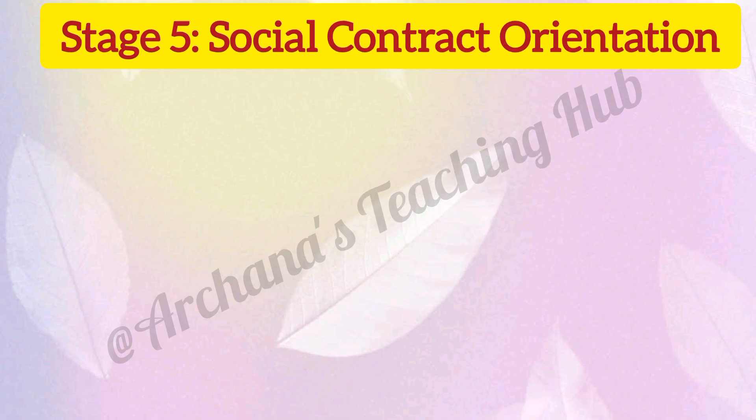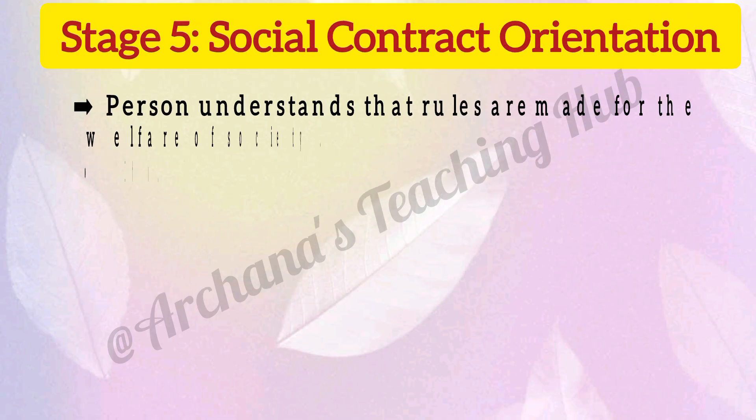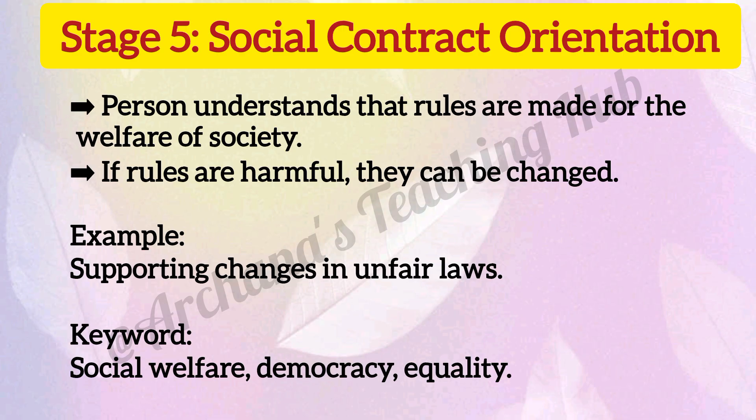Stage 5: Social contract orientation. The person understands that rules are made for the welfare of society. If rules are harmful, they can be changed. For example, supporting changes in unfair laws. Keywords: social welfare, democracy, equality.